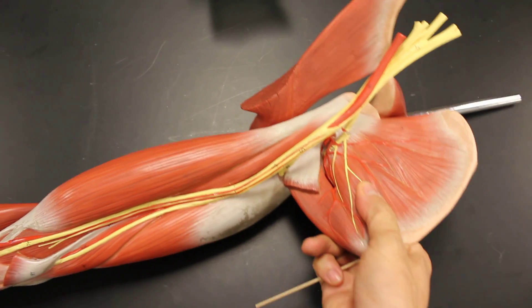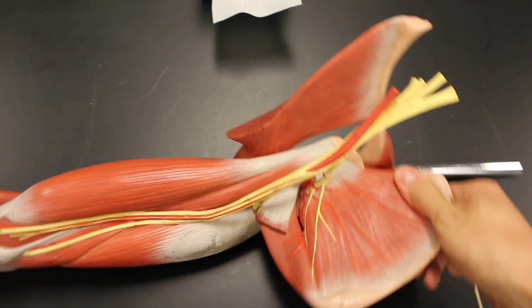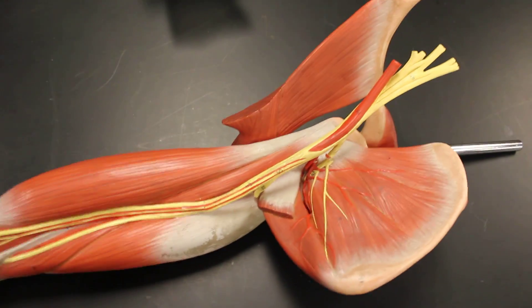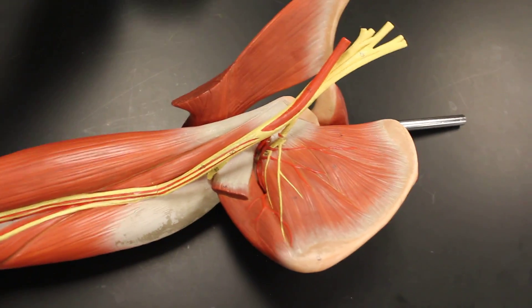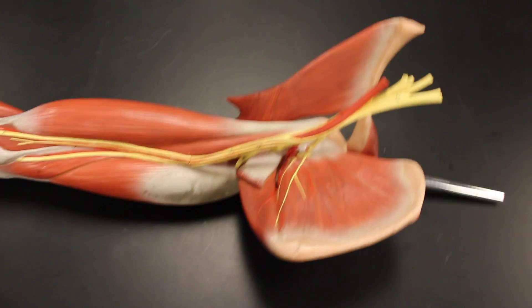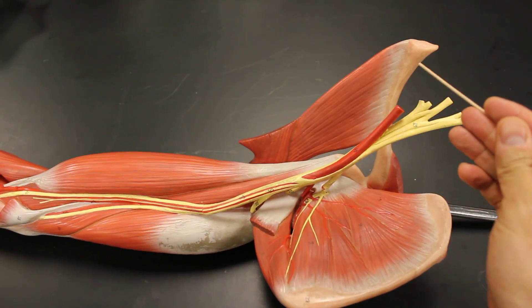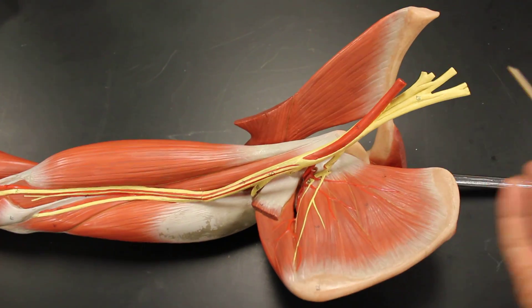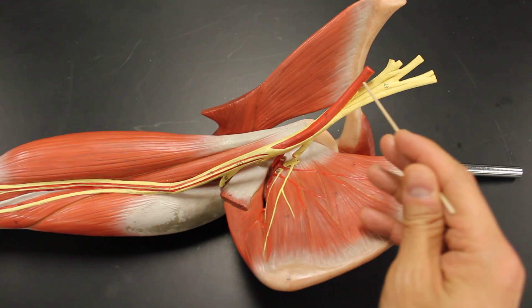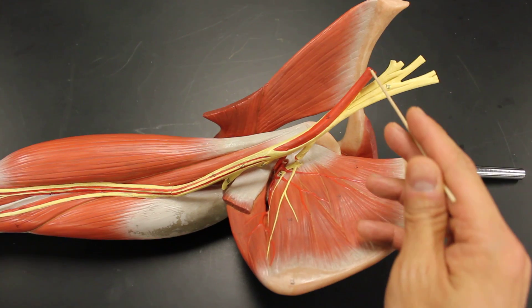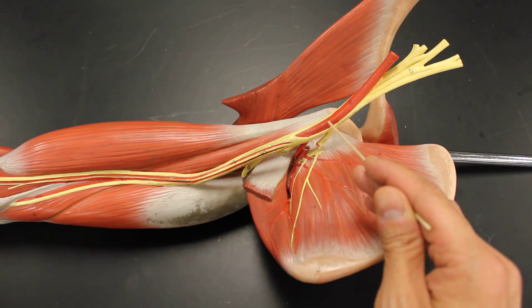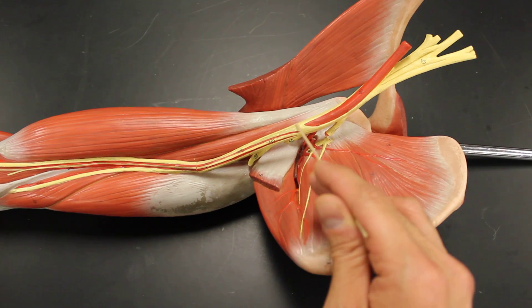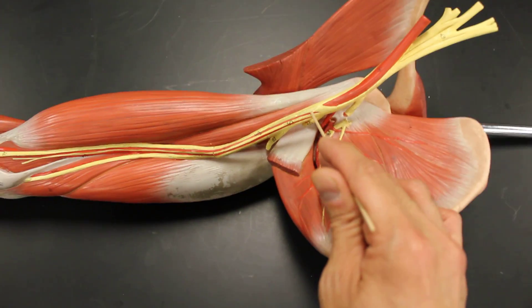If you can remember that arteries essentially get their names when they go into a region or when they branch. Let's get oriented first. This is the clavicle of the upper extremity. As we're talking about arteries, this one directly underneath the clavicle is called the subclavian, and then once it moves into the axillary region, we call it the axillary artery.